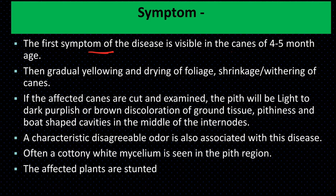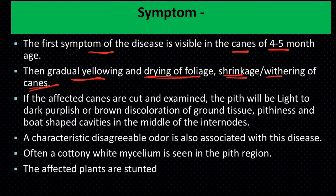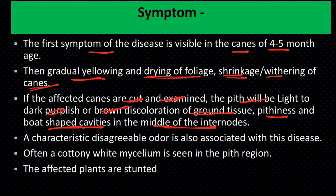The first symptom of the disease is visible in canes 4 to 5 months old. Symptoms appear as gradual yellowing and drying of the foliage, and shrinking or withering of the canes. If affected canes are cut and examined, the pith will show light to dark purple or brown discoloration of the ground tissue. Pithiness and boat-shaped cavities in the middle of the internode can be seen. A bad smell is also associated with the disease.